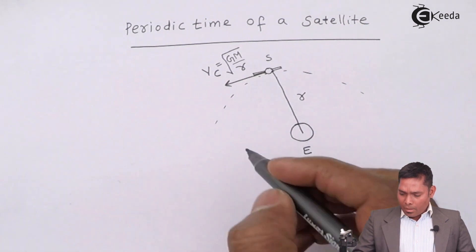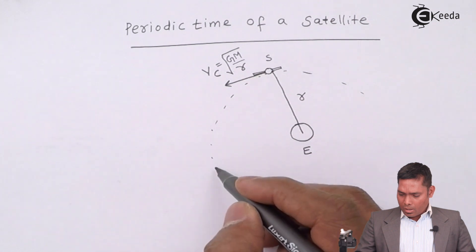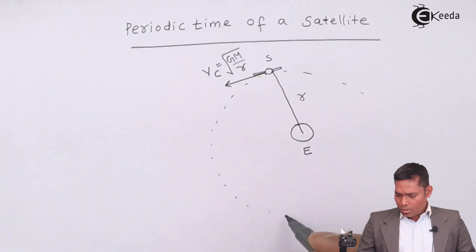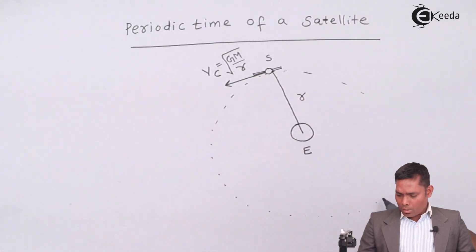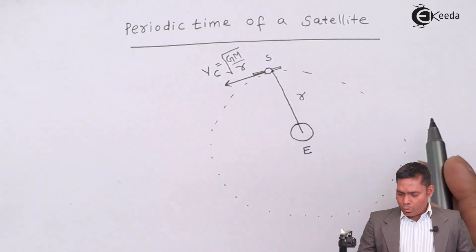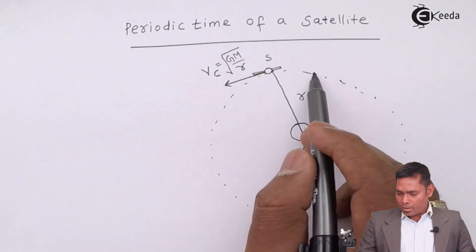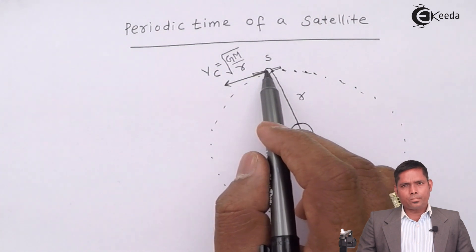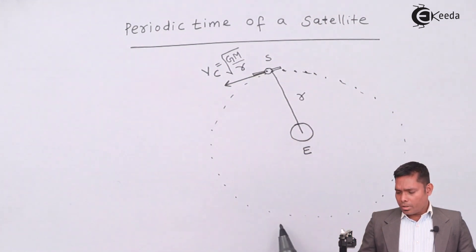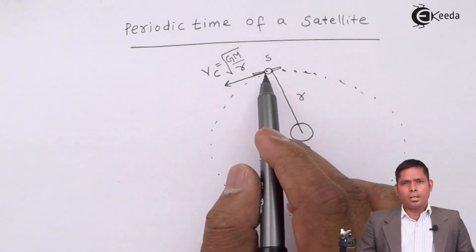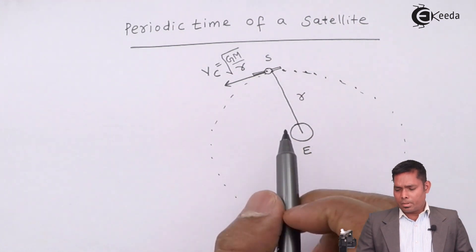Now, periodic time means how much time it will take to complete one revolution or rotation around the planet. Starting from here, it comes back to the same point again, how much time it takes, that is time period.